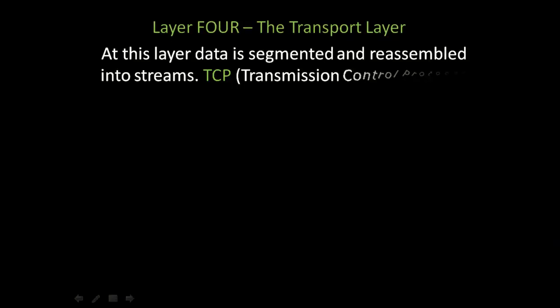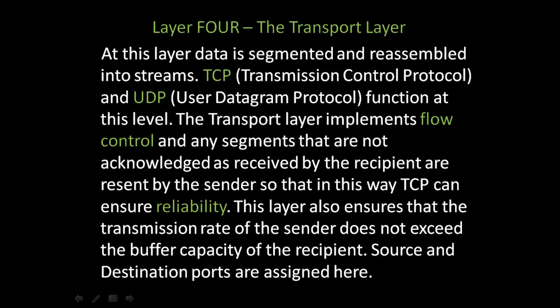Let's take a look at layer 4, the transport layer. At this layer, data is segmented and reassembled into streams. TCP, or transmission control protocol, and UDP, user datagram protocol, function at this level. The transport layer implements flow control and any segments not acknowledged are resent, ensuring reliability. This layer also ensures the transmission rate of the sender does not exceed the buffer capacity of the recipient. Source and destination ports are assigned here.